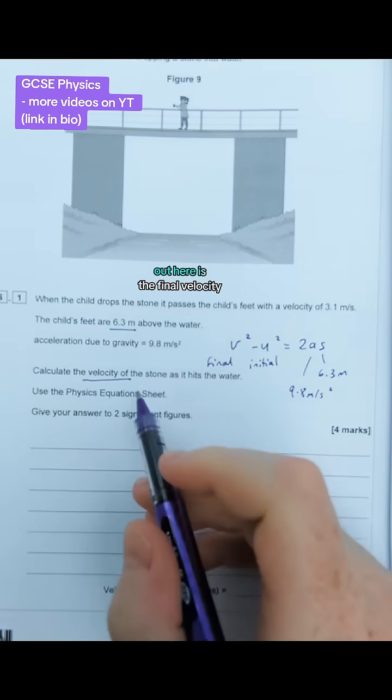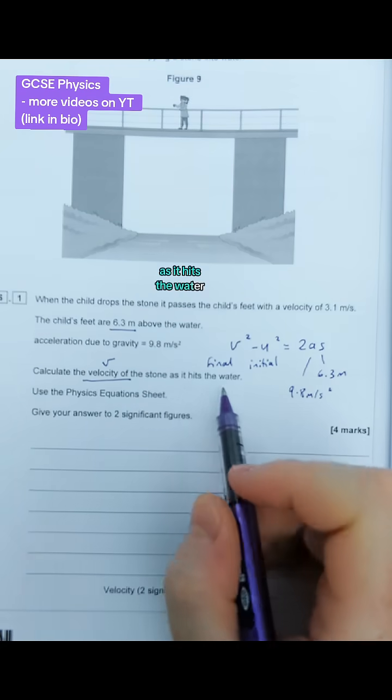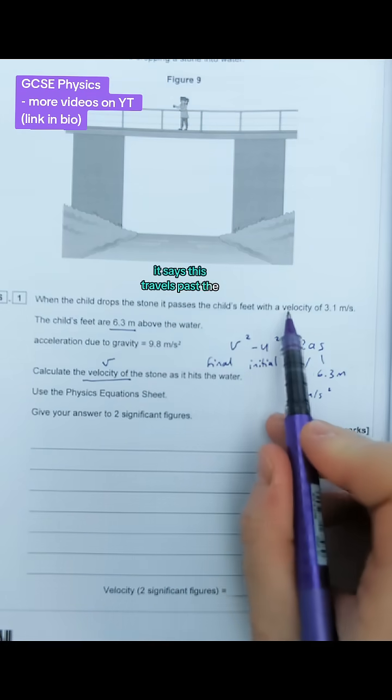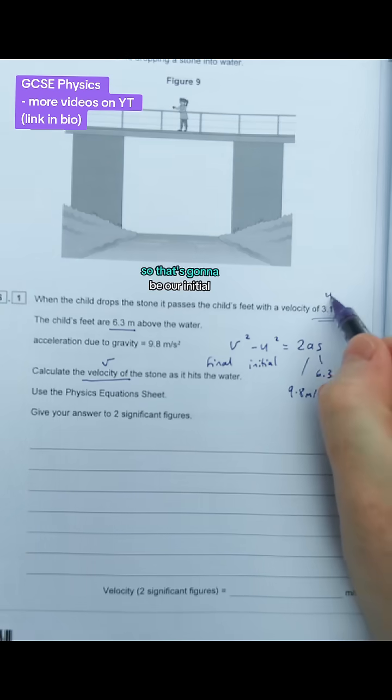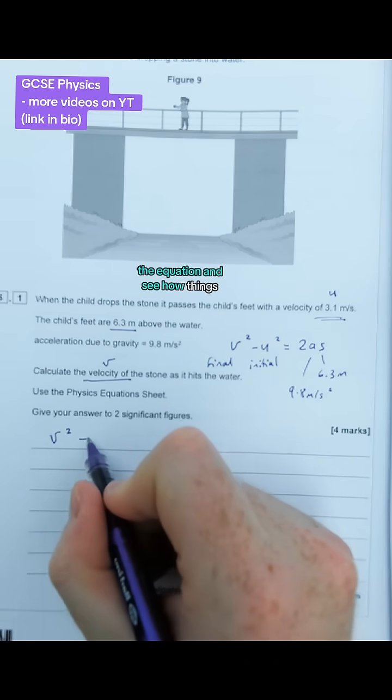The one we're trying to work out is the final velocity of the stone, v, as it hits the water. It says it travels past the person's feet with a velocity of 3.1, so that's our initial velocity. Let's put these numbers into the equation and see how things work out.